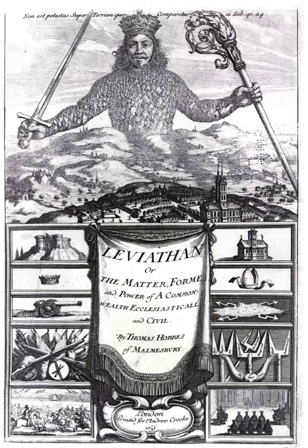According to Jeffrey and Painter, "If we define the nature of the state in one place or era, we are liable to find that in another time or space something which is also understood to be a state has different characteristics." The most commonly used definition is Max Weber's, which describes the state as a compulsory political organisation with a centralised government that maintains a monopoly of the legitimate use of force within a certain territory.